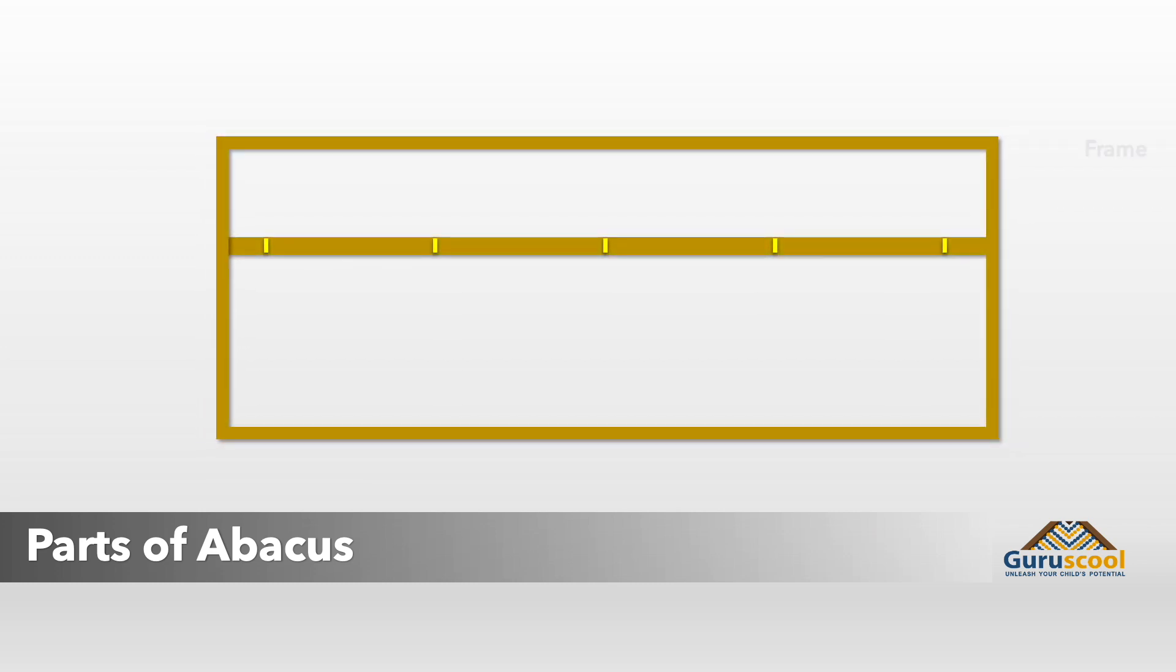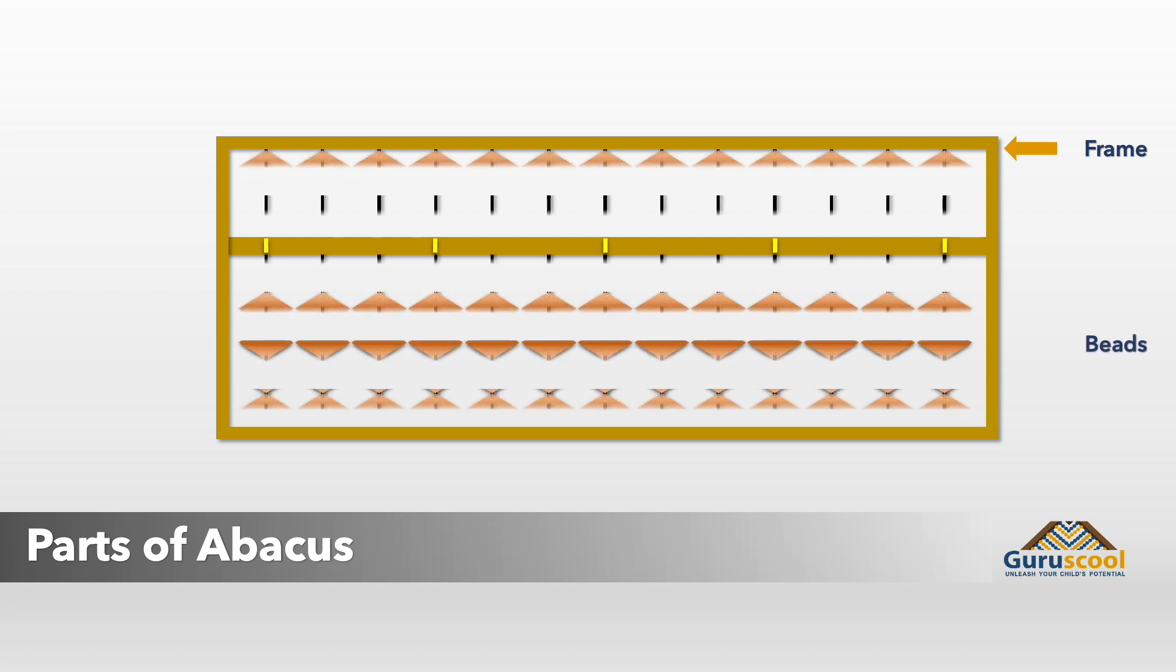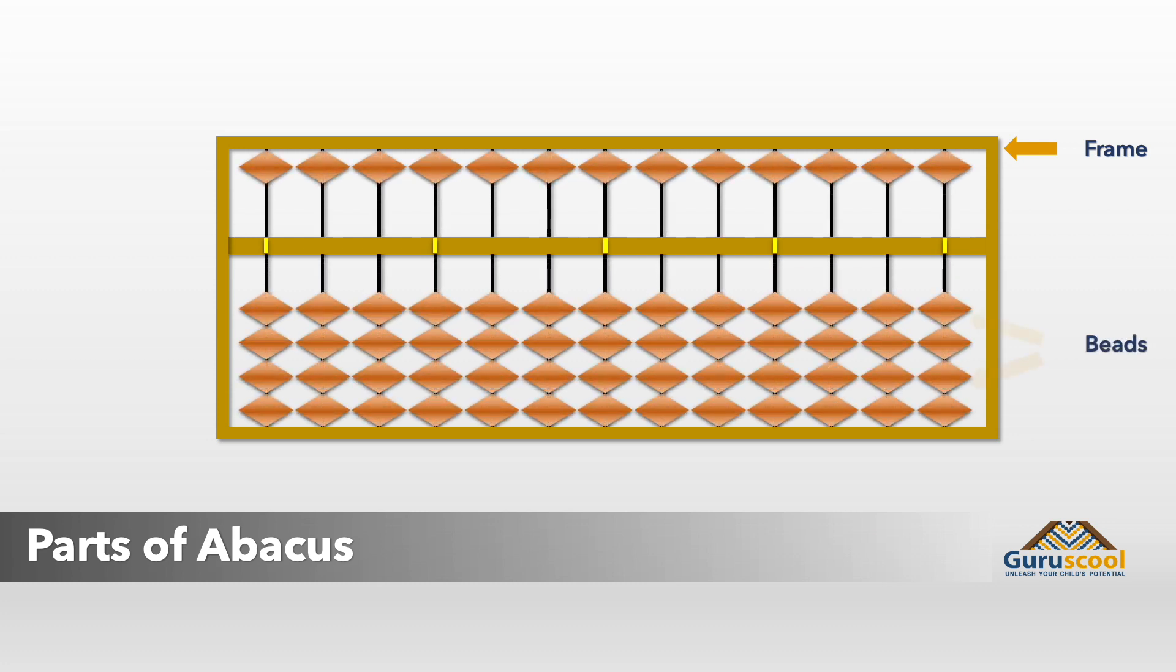The abacus is made of an open wooden or plastic frame consisting of beads mounted on sticks or rods called columns that represent place values. Depending on the design, it contains either 13 or 17 rods.